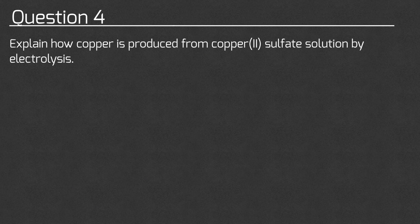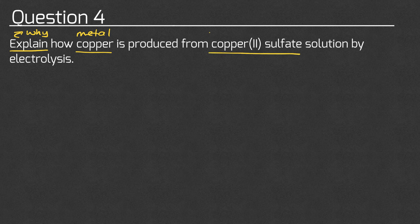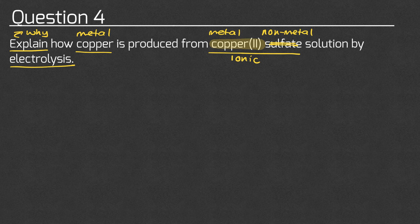For question four, we're going to explain how copper is produced from copper-2-sulfate solution by electrolysis. This is an explain question, so we need to give a reason why. We know that copper is a metal, and copper sulfate is an ionic compound because copper is the metal and sulfate is the non-metal. We can also disregard the sulfate part, because the question is just asking us about the copper.